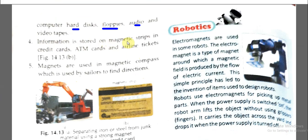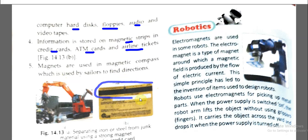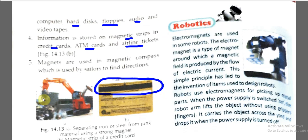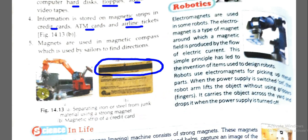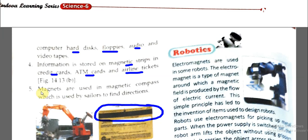Information is stored on magnetic strips in credit cards. ATM cards and airline tickets also work this way — the card contains a magnetic strip in which information is stored. Magnets are also used in the magnetic compass, which is used by sailors to find directions. The black strip on the back of ATM and credit cards is actually a magnetic strip.